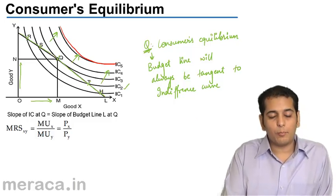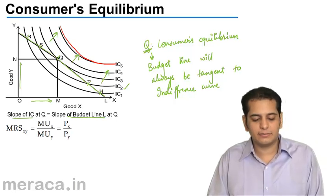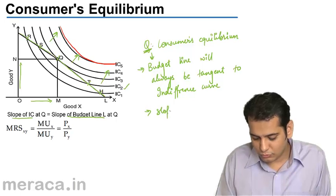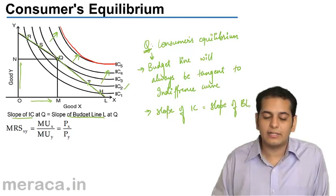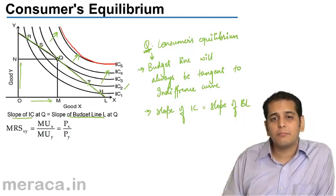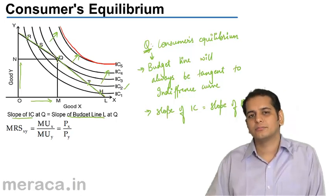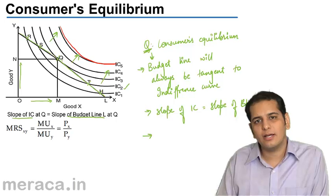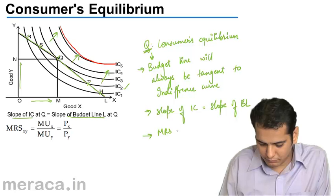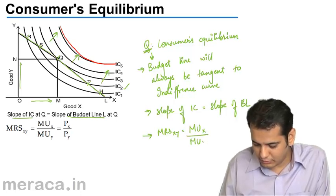We can also say that at point Q, the slope of the indifference curve equals the slope of the budget line. Both meet at the same point Q, so their slopes have to be the same at that point. And finally, the marginal rate of substitution at point Q — that is where the consumer has reached his equilibrium — will be equal to marginal utility of X divided by marginal utility of Y, which equals the price of X divided by the price of Y.